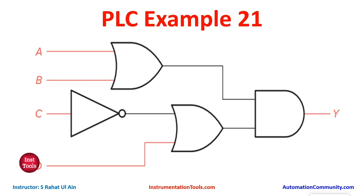There is an OR gate with inputs A and B, and then there is NOT of C, connected in OR with D. Then there is an AND gate with the output of A plus B and the output of C-NOT plus D. We will use normally open contacts for A, B, and D, and a normally closed contact for C. We will connect A and B in parallel, then C and D in parallel, and then connect A+B and C+D in series.